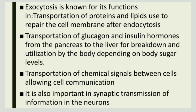The transportation of glucagon and insulin hormones is also done by exocytosis — occurring from the pancreas to the liver, then broken down and transported to blood vessels. The transportation of signals for cell-to-cell communication is also done by exocytosis. Most importantly, synaptic transmission of information in neurons is carried out by exocytosis.